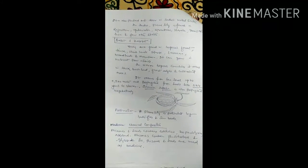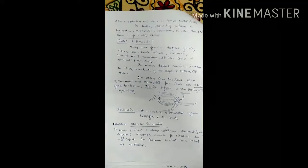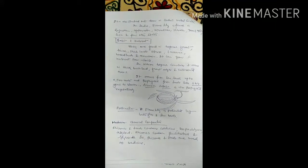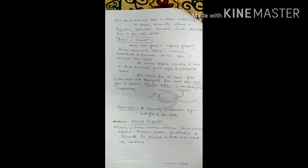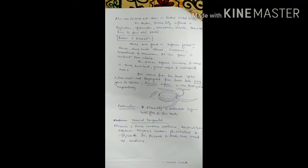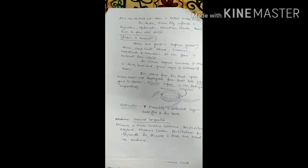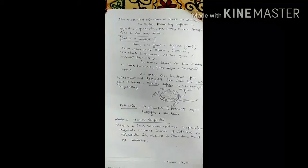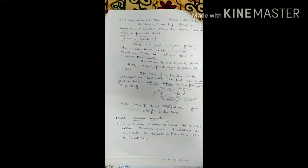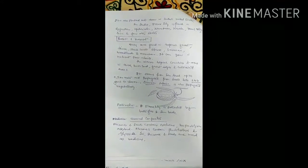They are found in tropical forests, thick shrubland, sparse savannah woodland and mountain. It can grow in native and poor soil. In warm tropical countries, it occurs in thick brushed land, forest edge and cultivated area. It occurs from sea level up to 2,500 meters and propagates from seed, takes 3 to 4 years to blossom.